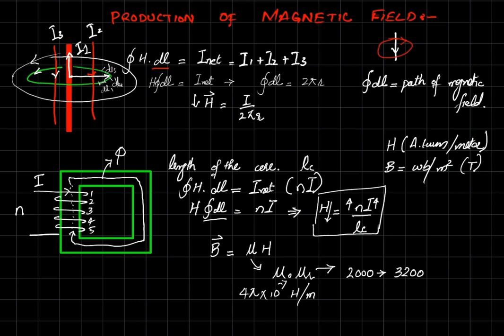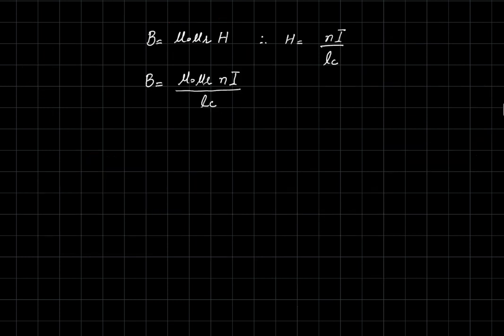The core shown in the figure is not a single sheet but a cubic-type structure with a cross-sectional area. This shaded area is called the area of the core. If we increase the area of the core, there is more space for magnetic lines of force to pass through. If we multiply both sides of the equation by the area of the core, we obtain the magnetic flux Φ.